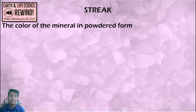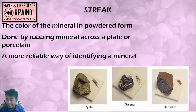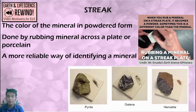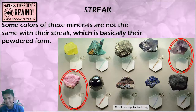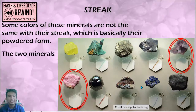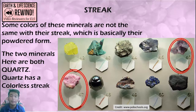A more reliable property is the streak, which is the color of the mineral in powdered form. It's done by rubbing the mineral across a white porcelain plate. Most mineralogists do this to reliably identify what color a mineral really is. Some minerals don't have the same color as their streak — like rose quartz and amethyst: they may look different colors, but they have the same streak because they are both quartz. Bottom line: streak is more reliable than color.